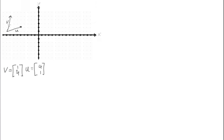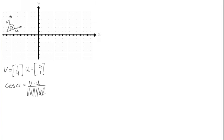If we want to find the angle between them, we can see that there definitely is an angle — we can call it theta. The formula we use here is: cosine of theta is equal to v dot u divided by the length of v times the length of u.